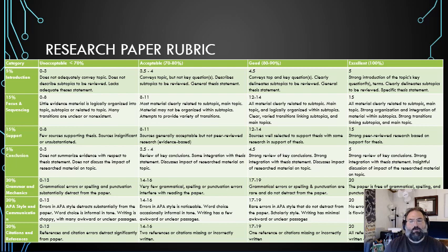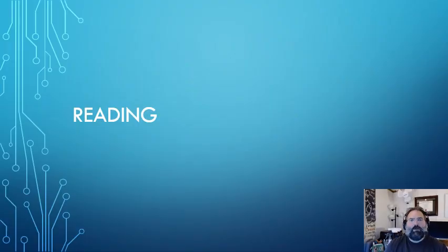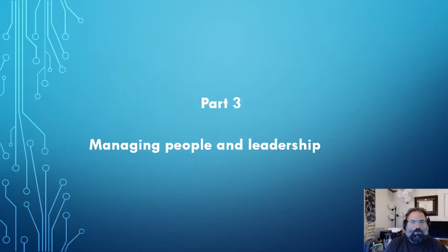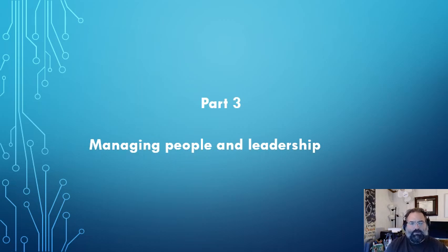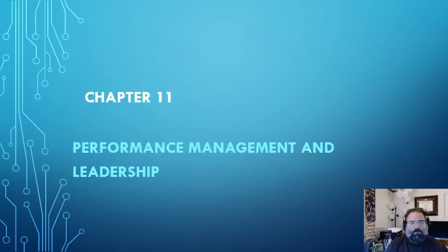This is the rubric we've been using for submitted APA-type assignments. It doesn't apply to discussion boards, but applies to all individual projects. Moving on to the reading: we're into part three, managing people and leadership of the text, and we're discussing chapter 11, performance management and leadership.